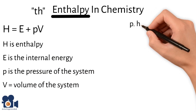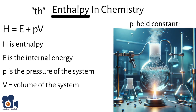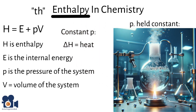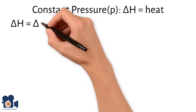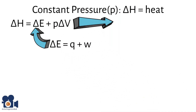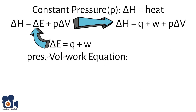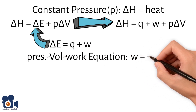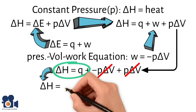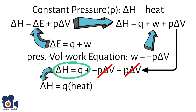Enthalpy is particularly useful in scenarios where pressure is held constant, such as in many chemical reactions happening in open containers in laboratories. Under constant pressure, the change in enthalpy, delta H, equals the heat absorbed or released by the system. This is why it's useful to think of it as heat. The equation when pressure is constant is delta H equals delta E plus P delta V. Inserting delta E, we get delta H equals Q plus W plus P times delta V. According to the pressure-volume work equation, W equals negative P times delta V. Plugging this in, delta H equals Q — heat. So the change in enthalpy is heat, but pressure must be constant.